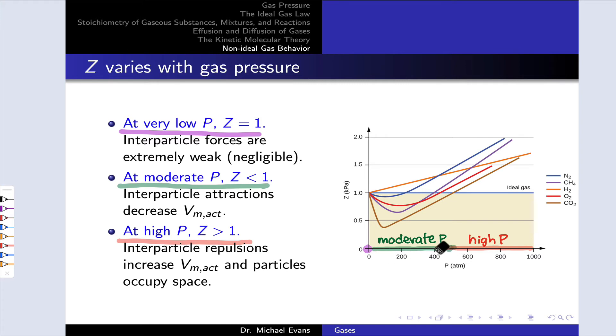When we get into moderate pressure territory, the interparticle attractions are starting to decrease that molar volume. We start getting some intermolecular forces building in, and this causes Z to decrease. And this tends to be more pronounced for more polar gases. Things like CO2, which contains some polar bonds, we see a large dip in Z indicating attractive intermolecular forces at moderate pressures.